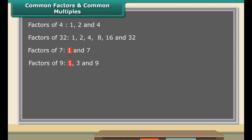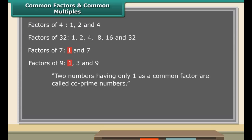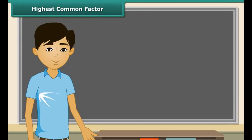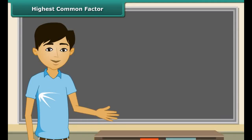Consider the numbers 7 and 9. The factors of 7 are 1 and 7. The factors of 9 are 1, 3, and 9. Since 1 is the only common factor between 7 and 9, they are co-prime numbers. If two numbers have only 1 as the common factor, they are called co-prime numbers.